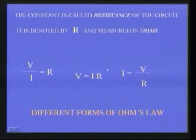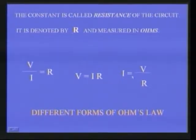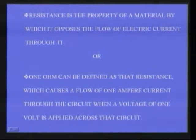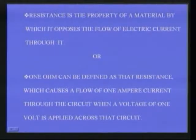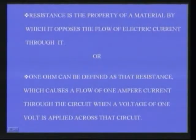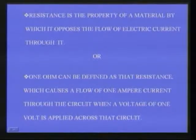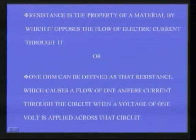Ohm's law can be put in different forms: V/I = R, or V = IR, and similarly I = V/R. Now let us see the definition of resistance. Resistance can be defined in two ways: resistance is the property of a material by which it opposes the flow of electric current through it; or, resistance is 1 Ohm if it causes a flow of 1 ampere when a voltage of 1 volt is applied across the circuit.